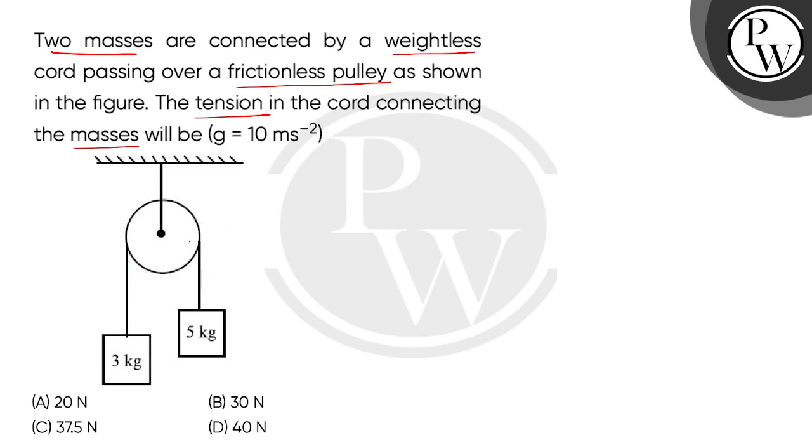Now we can say it is simple Atwood's machine. So we have to find how much tension in this cord is. So children, first we have to make free body diagram.